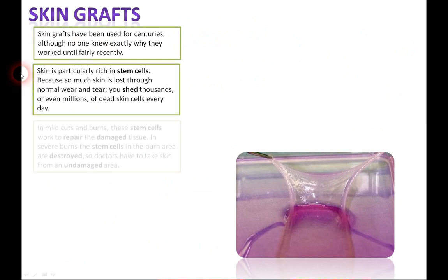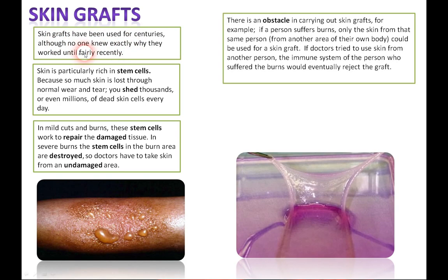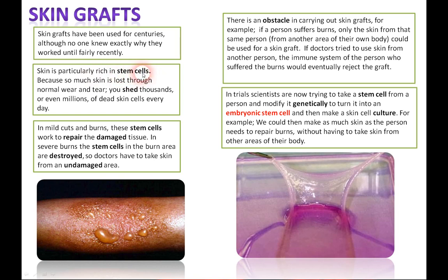Here's information about skin grafts, used for centuries. No one knew exactly why they worked until fairly recently — the reason is that skin is particularly rich in stem cells. You lose thousands all the time. Mild cuts and burns: stem cells work to repair the damaged tissue. In severe burns, stem cells are destroyed, so doctors have to take skin from an undamaged area. Only skin from the same person can be used as a skin graft — if skin from another person is used, the immune system would reject it. Scientists are now trying to take a stem cell from a person, modify it genetically to turn it into an embryonic stem cell, and make a skin cell culture — producing as much skin as needed to repair burns without taking skin from other areas of the body.